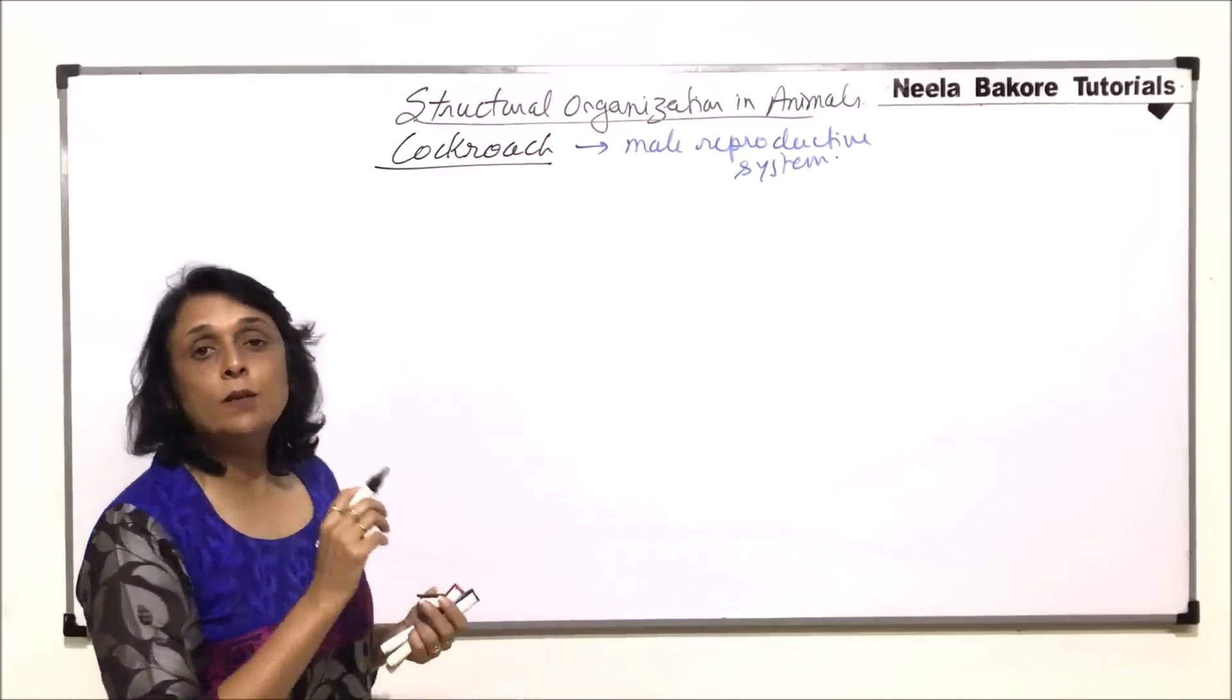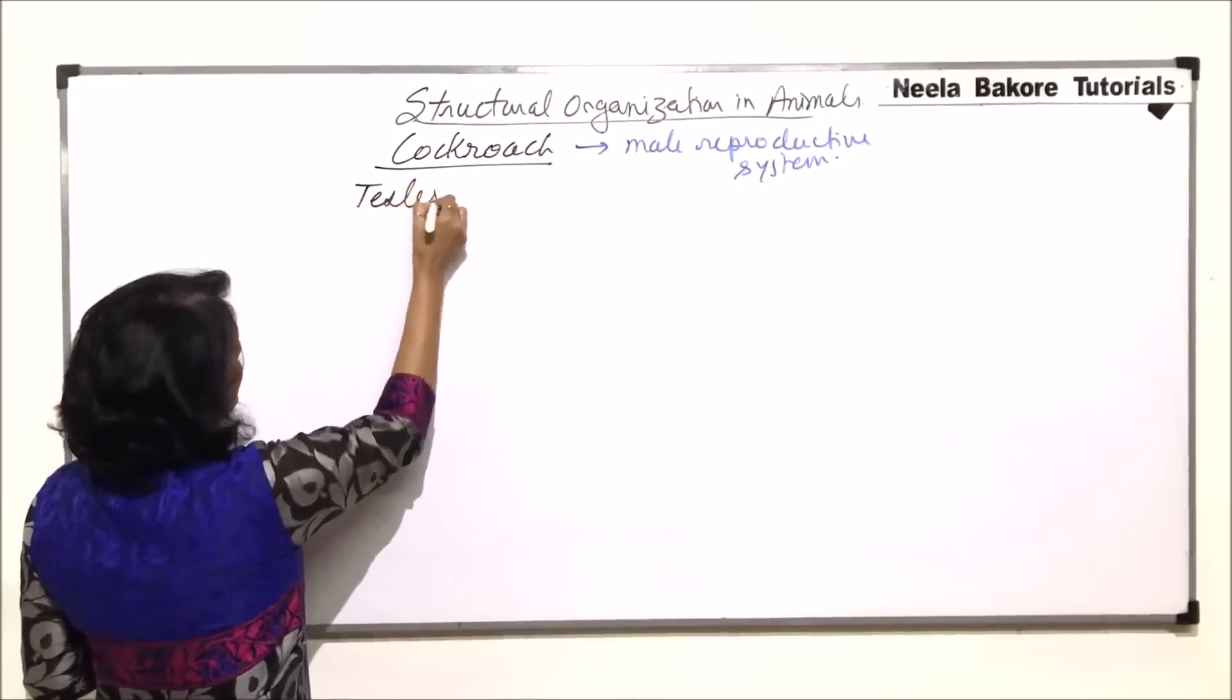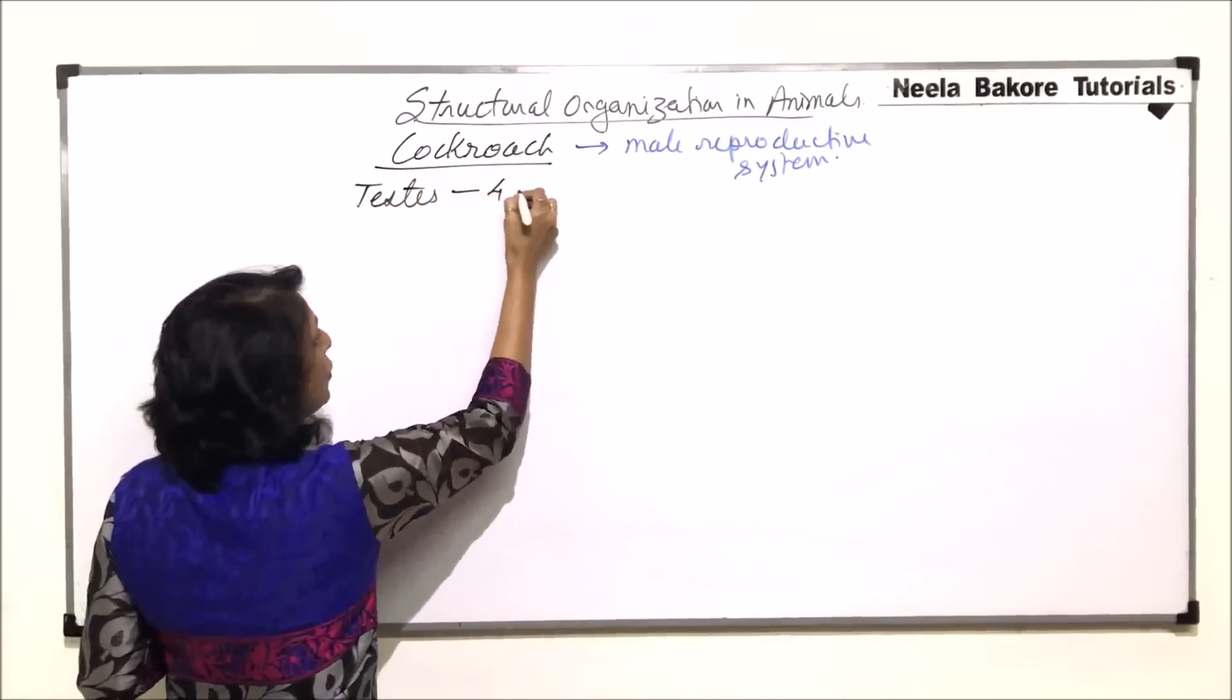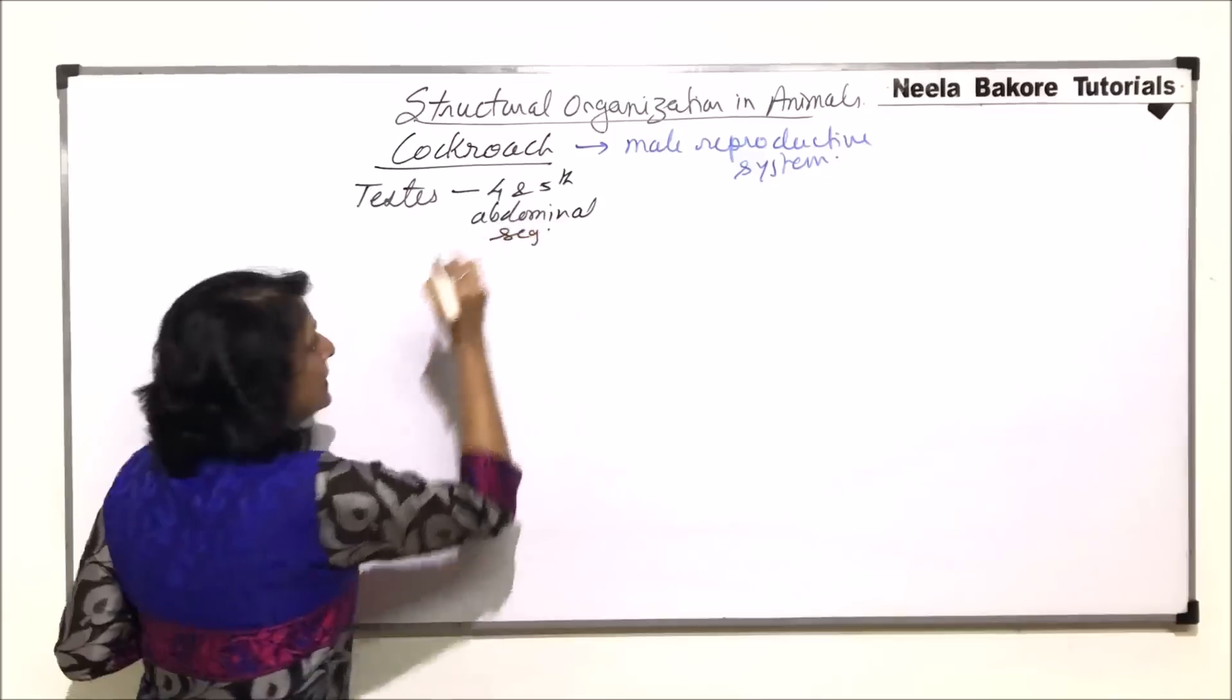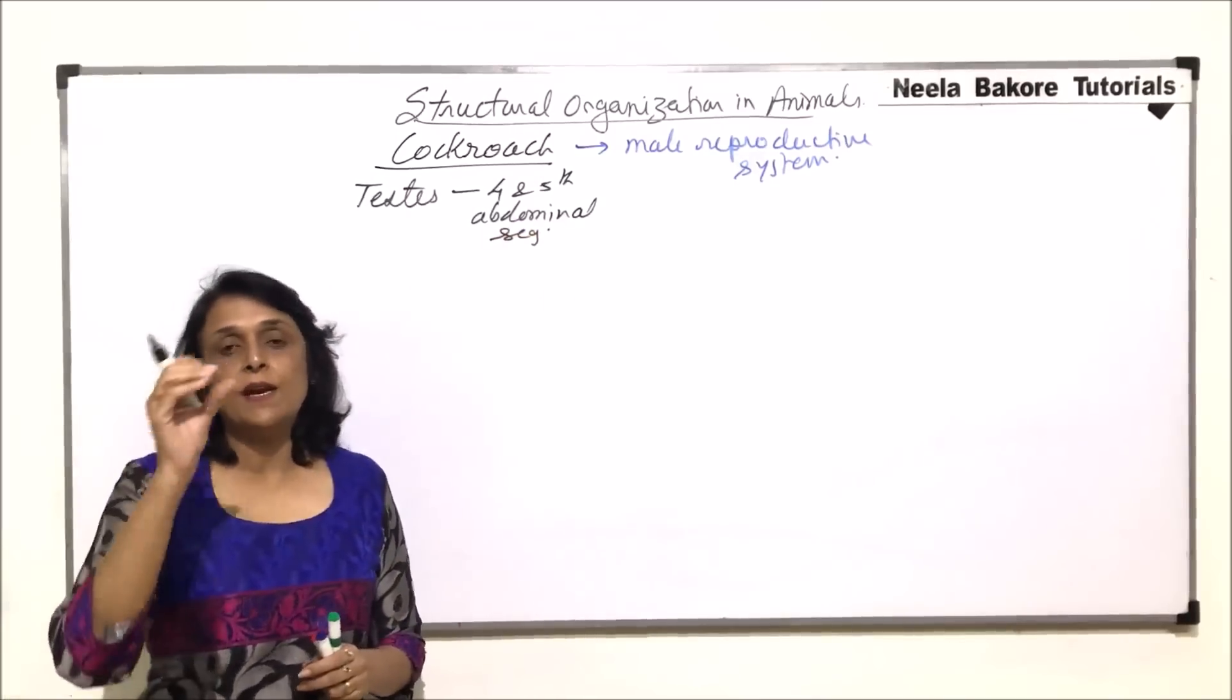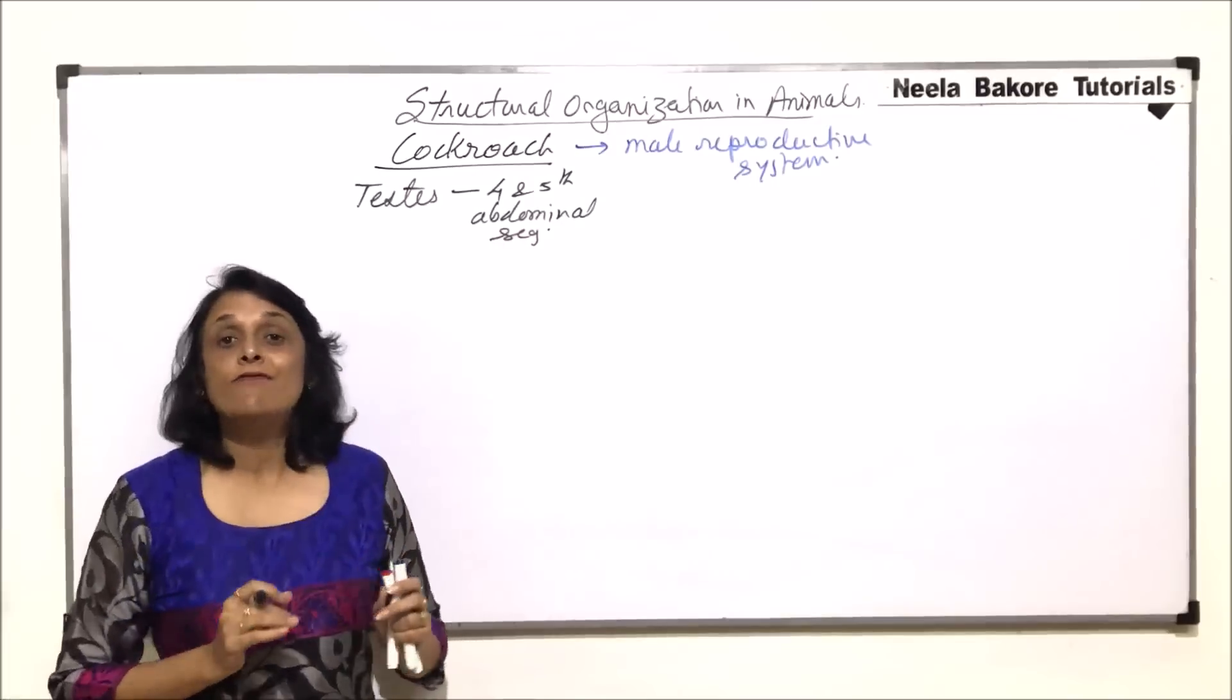Now the male reproductive structure is a pair of testes, and these testes are located in fourth and fifth abdominal segments. These testes are lobed structure. That means there are three lobes and they are buried in fat.